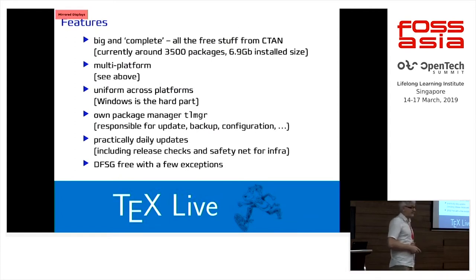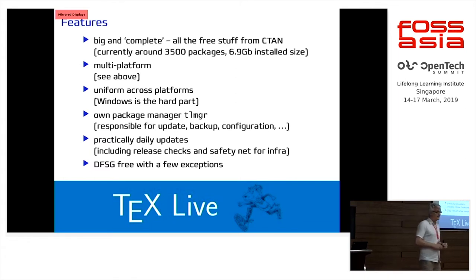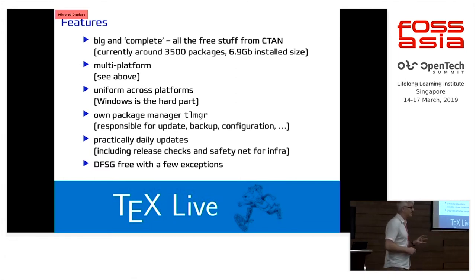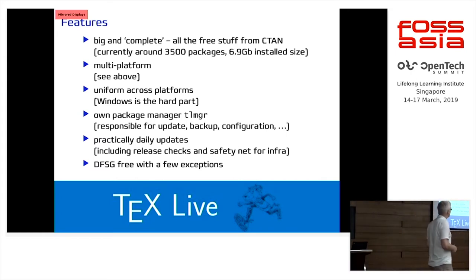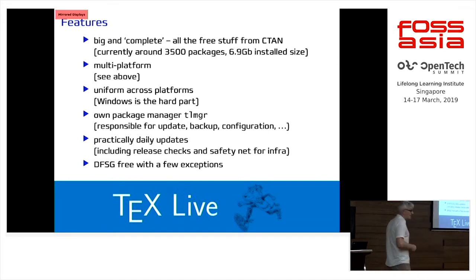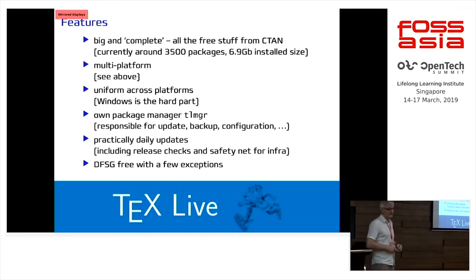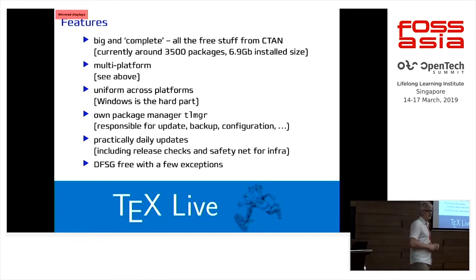So what are the features? It's big and it's complete. We include all the free stuff from CTAN — the Comprehensive TeX Archive Network. It's like CPAN, or CRAN for R, or CPAN for Perl or whatever. Currently we package from the CTAN network about 3,500 packages with close to 7 gigabytes of data. This is what is created on our server and distributed over the net.